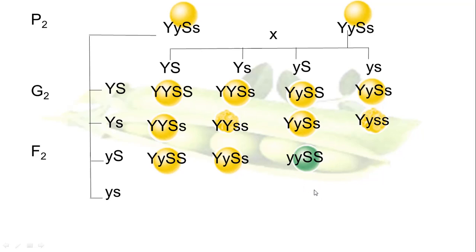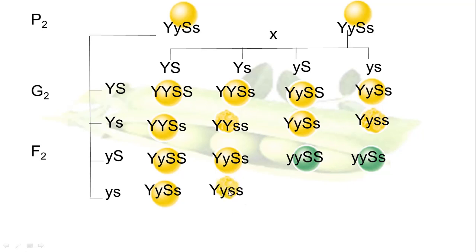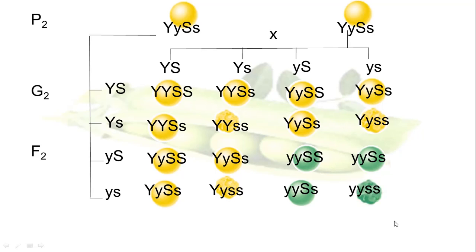Continuing: ys × YS gives YySs — yellow smooth. ys × Ys gives Yyss — yellow wrinkled. ys × yS gives yySs — green smooth. ys × ys gives yyss — green wrinkled (both characters recessive). Let's verify Mendel's ratio of 9 to 3 to 3 to 1. Counting yellow smooth: 1, 2, 3, 4, 5, 6, 7, 8, 9 — exactly 9. Counting yellow wrinkled: 1, 2, 3 — three. Counting green smooth: 1, 2, 3 — three. And green wrinkled: 1 — exactly 1.